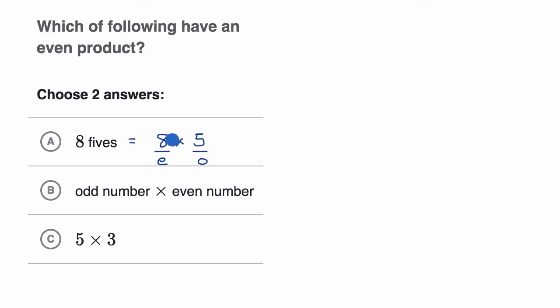You don't even have to know that eight times five is 40, which is an even number. We have an even times an odd, which is going to give us an even product. So this will definitely give us an even product.